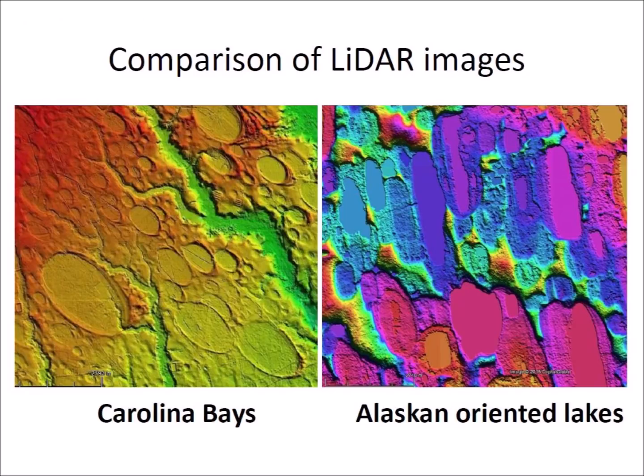It is not surprising that the Alaskan lakes cannot be fitted with ellipses. This LiDAR image shows the different shapes and rough borders of the Alaskan lakes. Although Kaczorowski wrote that the Carolina Bays were analogous to the Alaskan oriented lakes, it is evident that the Carolina Bays were not created by the same physical mechanisms as the lakes in Alaska.